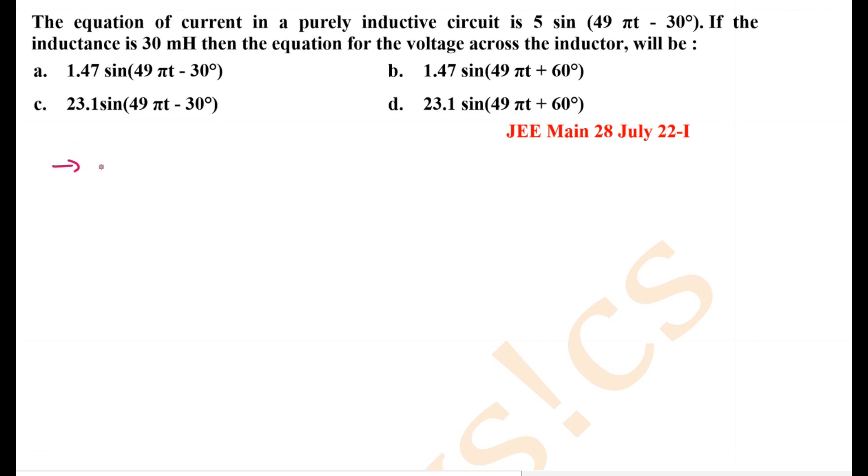So it is given that the equation of current is I equals I0, that is 5 sin 49 pi t minus 30 degrees.